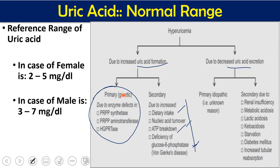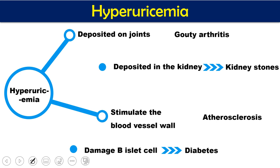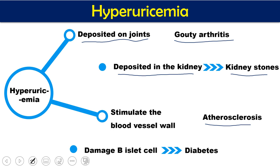For decreased uric acid excretion, primary causes are idiopathic. Secondary causes include renal insufficiency, metabolic acidosis, lactic acidosis, ketoacidosis — conditions of acidic pH that cause uric acid to crystallize and deposit rather than be excreted — as well as starvation, diabetes mellitus, or increased tubular reabsorption. Hyperuricemia leads to uric acid deposition in the joints causing gouty arthritis, kidney stone formation, stimulation of blood vessel walls causing atherosclerosis, and damage to beta cells of the islets of Langerhans leading to diabetes.